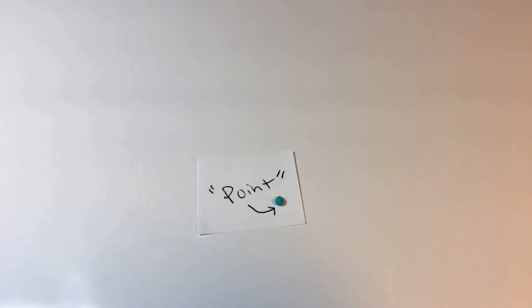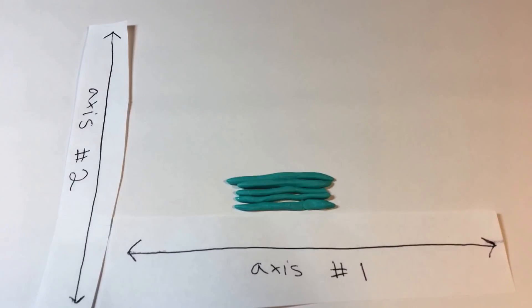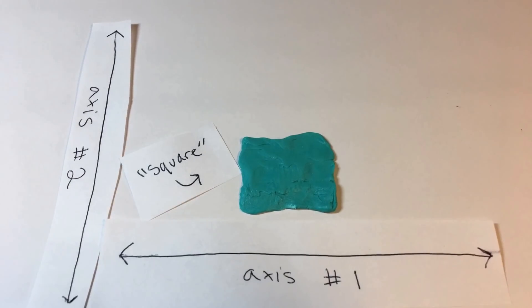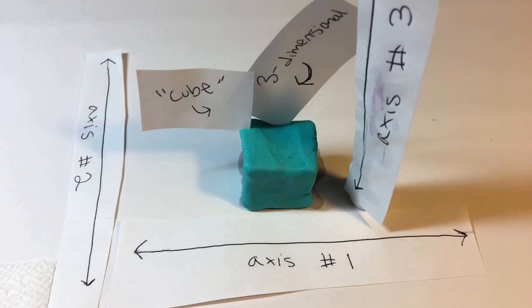This is a zero-dimensional point. Line an infinite number of them up along an axis to get a one-dimensional line segment. Line an infinite number of those up along a second axis to get a two-dimensional square. Stack an infinite number of those up along a third axis to get a three-dimensional cube.